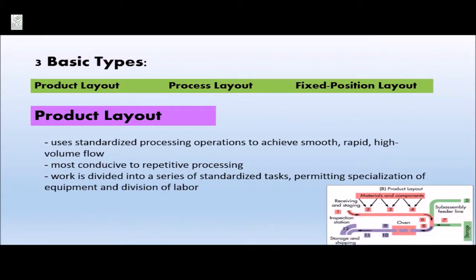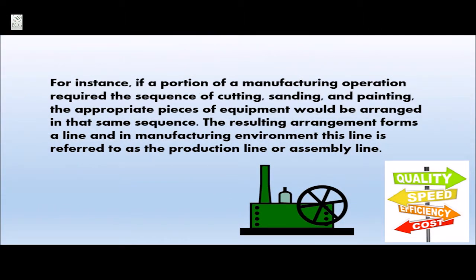Facility layout has three basic types: product, process, and fixed position. The first type is a product layout, which uses standardized processing operations to achieve smooth, rapid, high-volume flow. This kind of layout is the most conducive to repetitive processing. The work is divided into a series of standardized tasks, permitting specialization of equipment and division of labor. For instance, if a portion of a manufacturing operation required a sequence of cutting, sanding, and painting, the appropriate pieces of equipment would be arranged in that same sequence, forming a production line or assembly line.